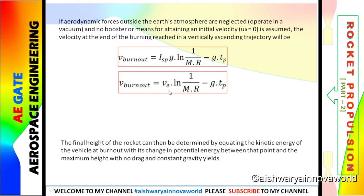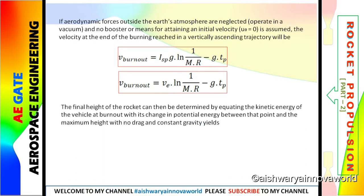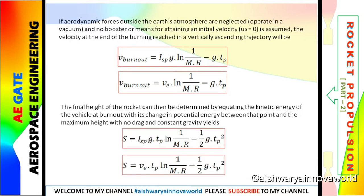Now we will see the height gained during vertical flight at a given burnout time. This is another important formula. The ideal rocket equation gives V burnout; for vertical flight, we add an extra term minus G·TP. For altitude, you multiply the entire velocity equation by TP. So the height formula includes a TP squared term and an extra 0.5·G·TP squared term.